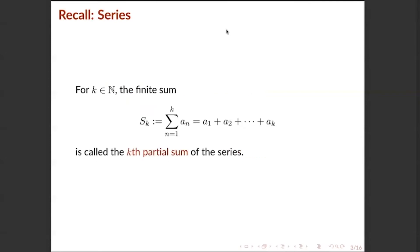Next, we will be talking about the k-th partial sum of the series. The k-th partial sum is defined as: for all k in the set of all natural numbers, the finite sum s_k is defined as the summation of a_n with n ranging from 1 to k, which is equal to a_1 plus a_2 plus a_3 up to a_k.